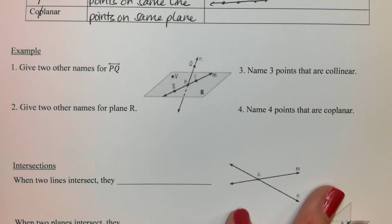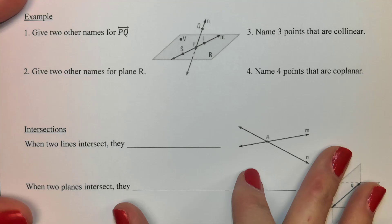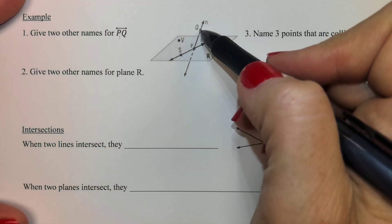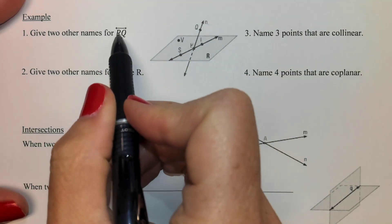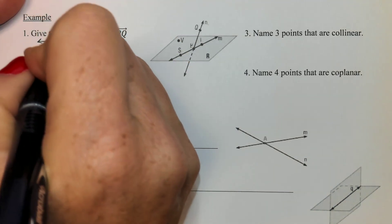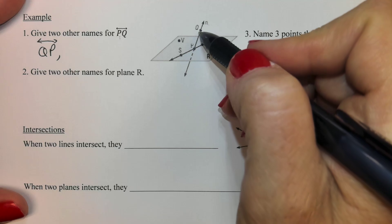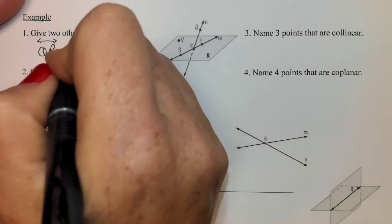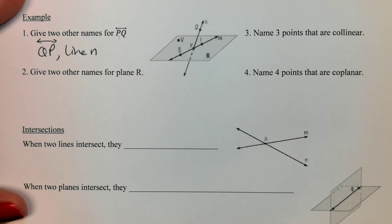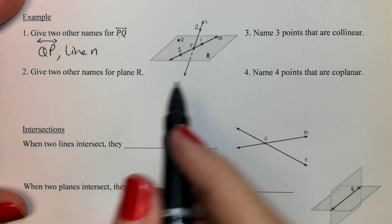Let's do some naming — let's practice all we just figured out. The first one says give two other names for line PQ. Well, your easy one is just to flip-flop them because you could write it as QP. Then go to the end of the line and look for your lowercase letter. That would be your other option: line N.